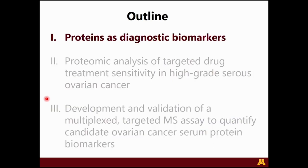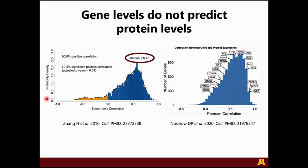Launching into proteins as diagnostic biomarkers — why do we need to study proteins? It's very notable that gene levels do not predict protein levels. On the left is a figure from a publication from a study I was involved in, where we looked at over 100 high-grade serous ovarian carcinomas. We conducted a thorough proteomic and transcriptomic analysis of these tumors. The main take-home message is the median correlation between gene abundance and protein abundance is only 0.45.